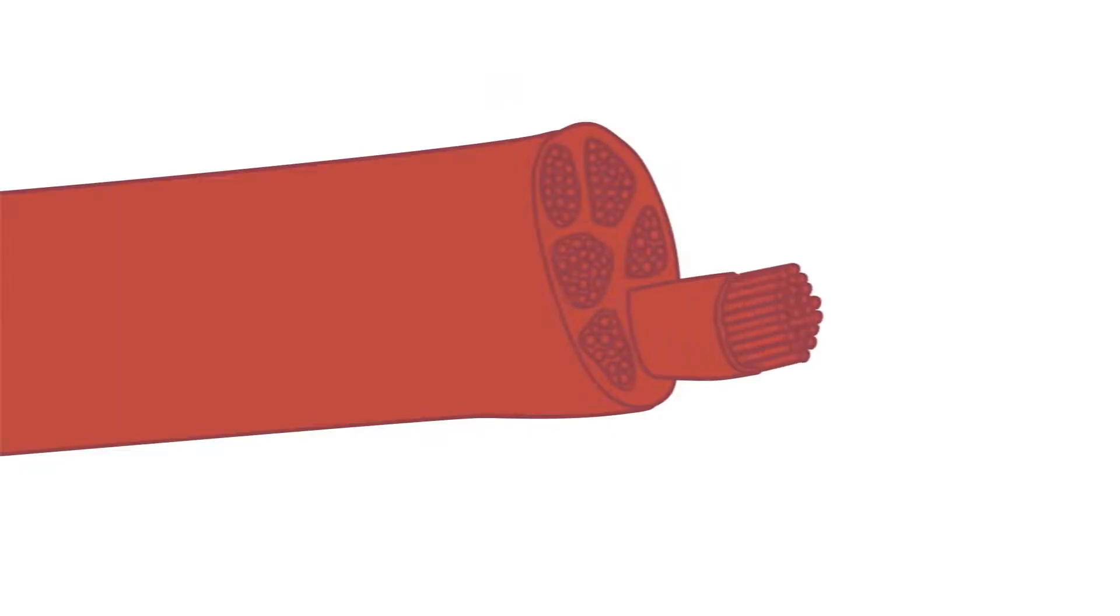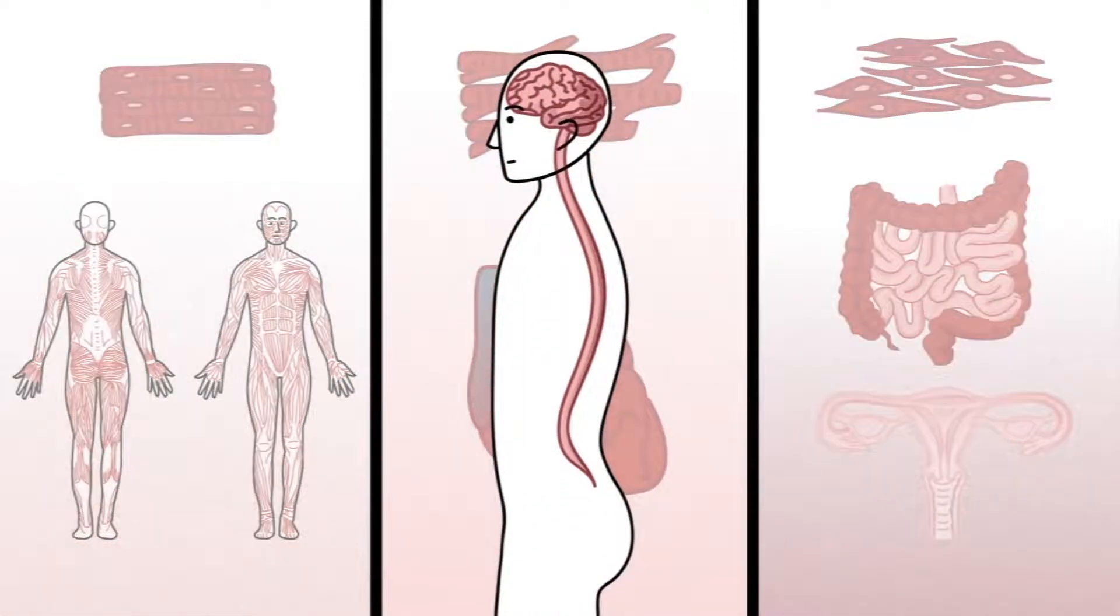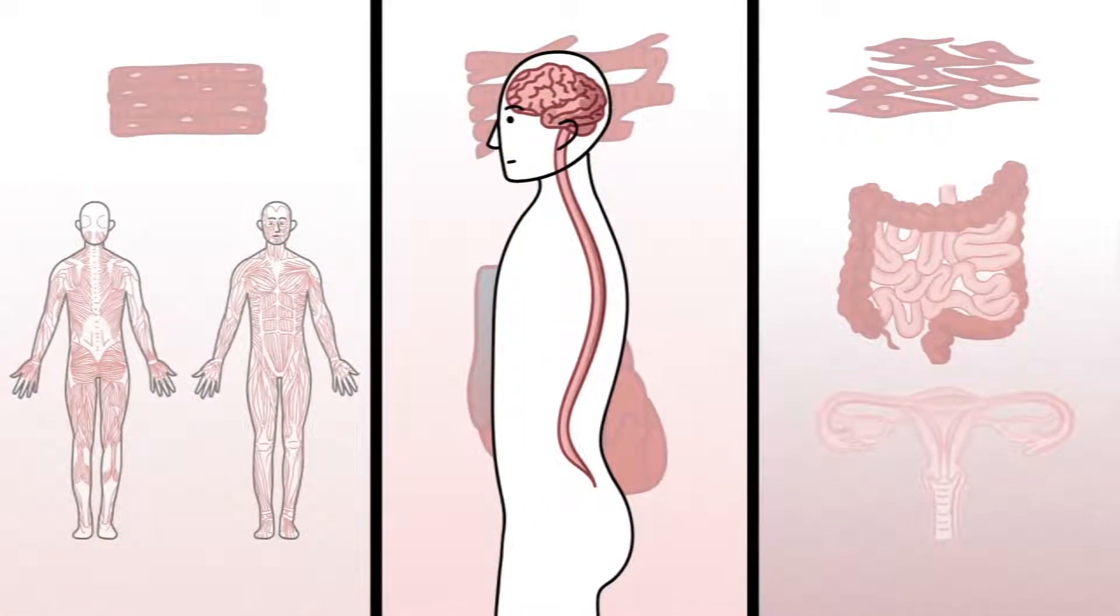All three types are made up of muscle cells, also known as fibers, bundled tightly together. These bundles receive signals from the nervous system that contract the fibers, which in turn generates force and motion.